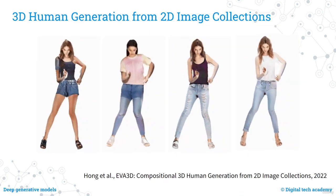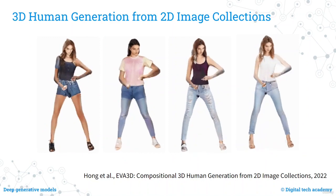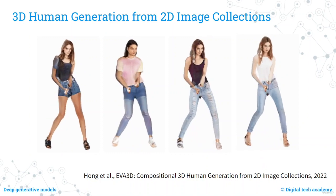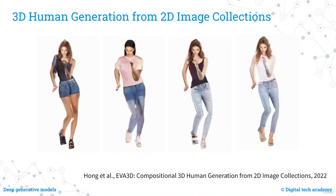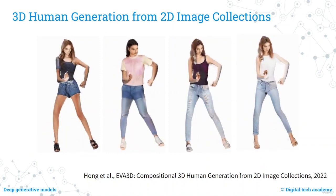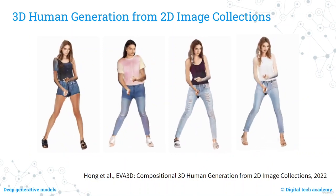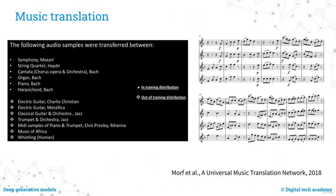Inverse graphics studies the inverse engineering of projection physics, aiming to recover the 3D world from 2D observations. Starting from images of different people with a desired pose, the algorithm can generate the corresponding 3D shape of the people. Beyond pictures and videos, generative models can also be used to generate music — for example, translating music across musical instruments, genres, and styles.